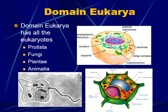The domain Eukarya has four kingdoms: Protista, Fungi, Plants, and Animals. We're going to go through each and clarify the differences. Even though they're all eukaryotes — meaning they all have the major organelles we've studied — there are fundamental differences between these four kingdoms.